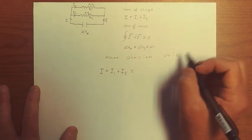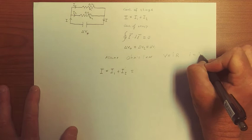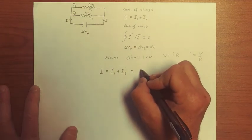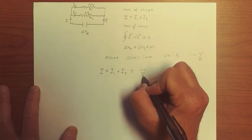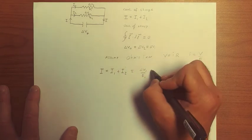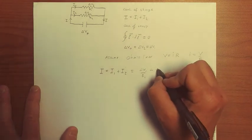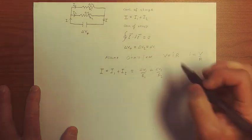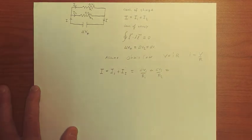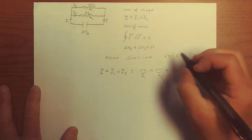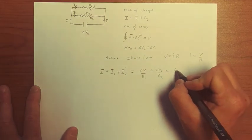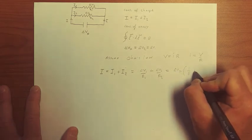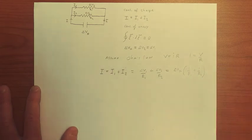And so I1 will be equal to delta V1 over R1 plus I2, which is delta V2 over R2. But we know that delta V1 and delta V2 are the same, they're just delta V star. So let's just pull out the delta V star and write this as 1 over R1 plus 1 over R2.